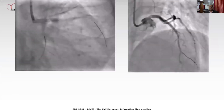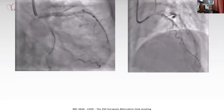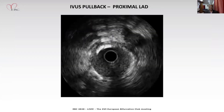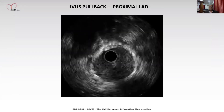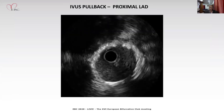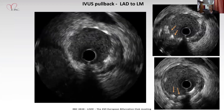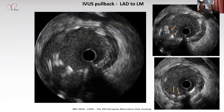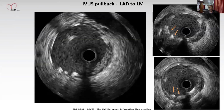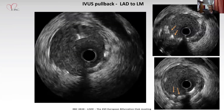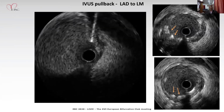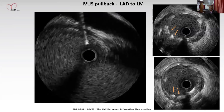Angiogram showed TIMI 3 flow in LAD with no angiographic compromise of the side branch. An IVUS pullback was obtained and showed a well-expanded stent in the LAD part. However, when we came to the left main part, there were floating struts across the circumflex and areas of malapposition in the distal left main just proximal to the circumflex. At this point, our plan was to recross into the circumflex, perform a kissing balloon dilatation, and finish with a proximal optimization technique.